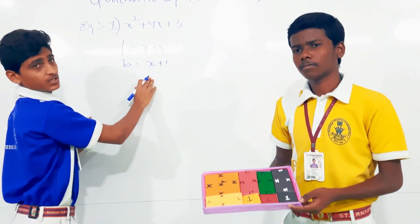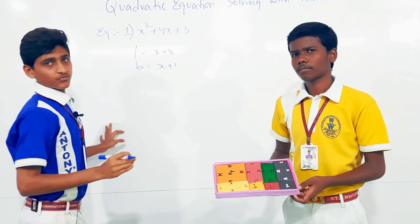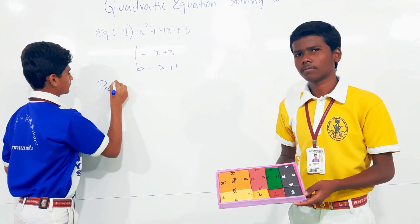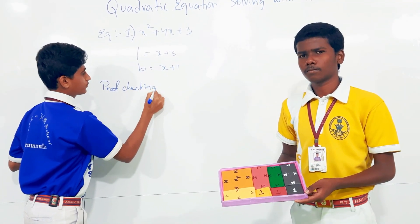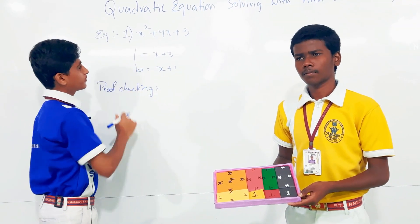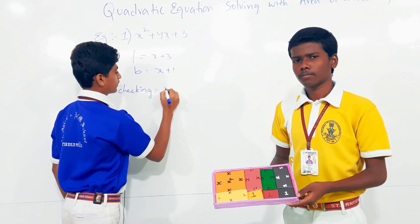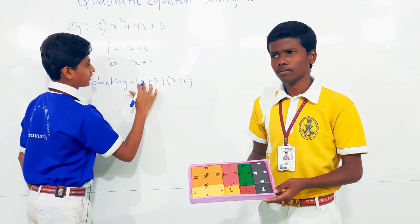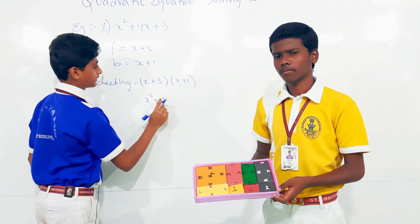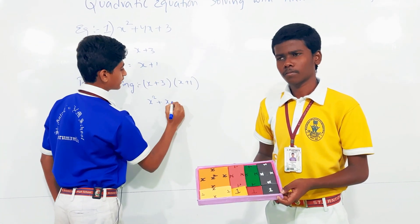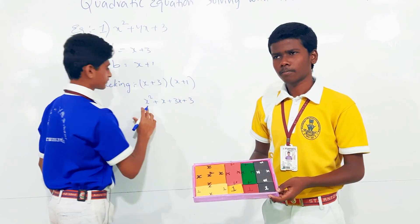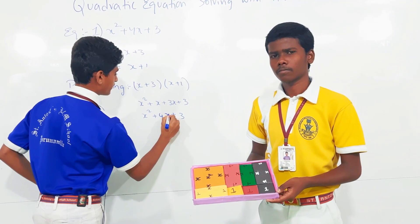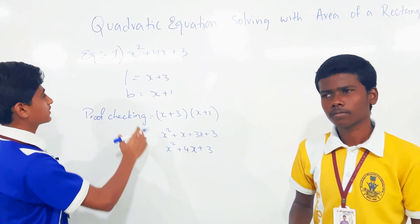Now we are checking whether the factors are correct by proof. If we multiply L and B, we should get the same equation. So (x + 3)(x + 1): x × x = x², x × 1 = x, 3 × x = 3x, and 3 × 1 = 3. That gives x² + x + 3x + 3, which simplifies to x² + 4x + 3. As we get the same equation, the factors of this equation are confirmed as x + 3 and x + 1.